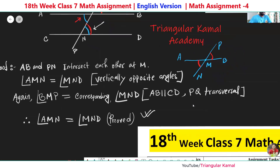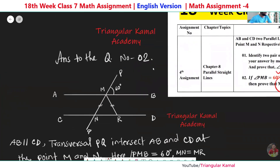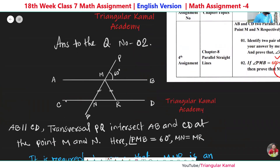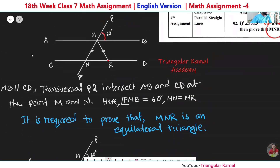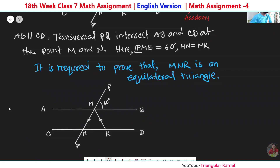Now let's look at question number two. Angle PMB is given as 60 degrees. R is any point on MD where MN equals MR. We need to prove that triangle MNR is an equilateral triangle. According to the question, AB and CD are parallel lines, R is any point on MD; we join MR, the two sides are equal, and this angle is 60 degrees. You can take a screenshot here — this is the enunciation for the problem.